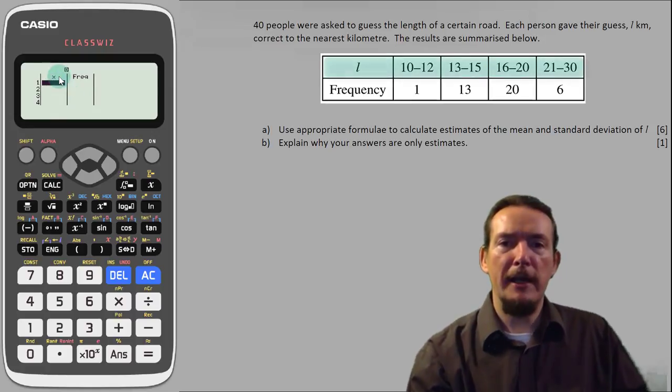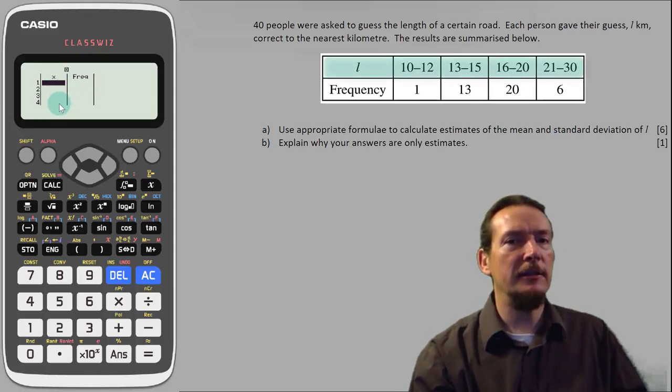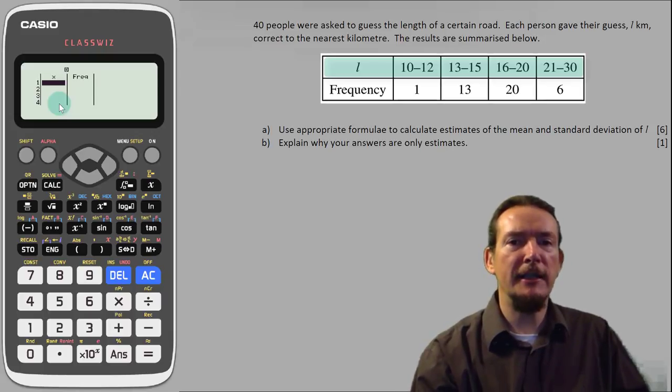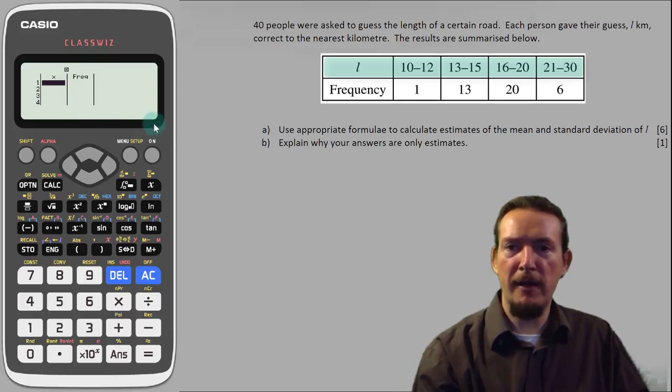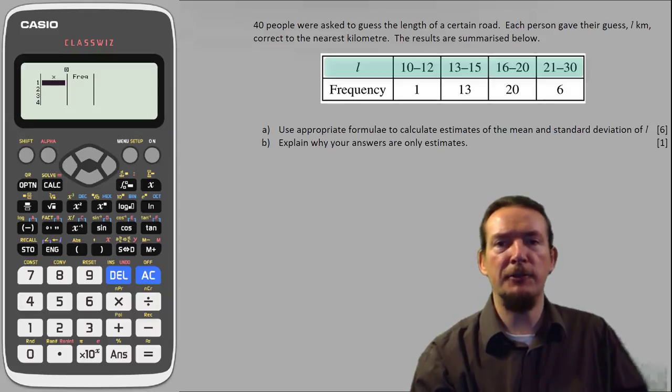The first column is for our L values but our table has ranges for these and the calculator only wants one number. So we are going to use the mid value as estimates for each, which we can find by averaging the upper and lower class boundaries for each group.